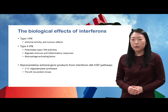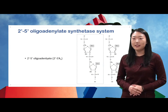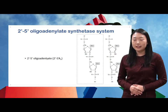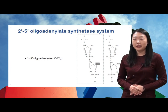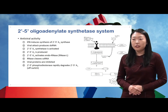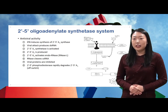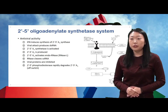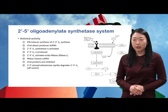The 2'5' oligoadenylate synthetase system mainly works as an antiviral pathway. When an interferon binds to a receptor, 2'5' oligoadenylate synthetases are synthesized. The invaded external viruses produce double-stranded RNA, and this activates 2'5' oligoadenylate synthetase. As a result, 2'5' oligoadenylate is produced and it activates endo-RNases. These endo-RNases cleave single-stranded RNA, causing viral RNA to be degraded. 2'5' phosphodiesterase works as an off-switch of this pathway by rapidly degrading 2'5' oligoadenylate.